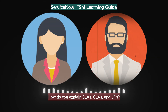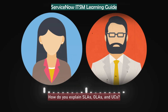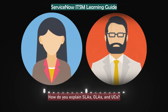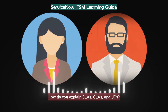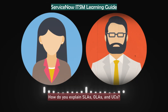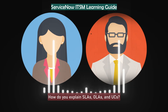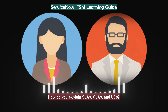How do you explain SLAs, OLAs, and underpinning contracts? I usually compare them to a supply chain. The SLA is our promise to the business — say, fix high-priority incidents within two hours. OLAs are internal promises between teams to make that possible. Underpinning contracts are vendor agreements backing it all. If one link breaks, the whole chain fails. I make sure they all align, review them quarterly, and adjust before users even feel the pain.